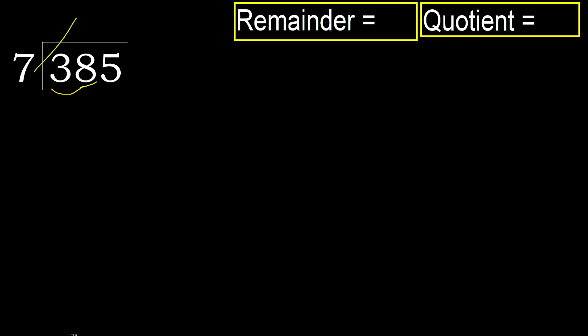7 multiplied by which number is nearest to 38, but not greater? 7 multiplied by 6 is 42, which is greater. 7 multiplied by 5 is 35, which is not greater.